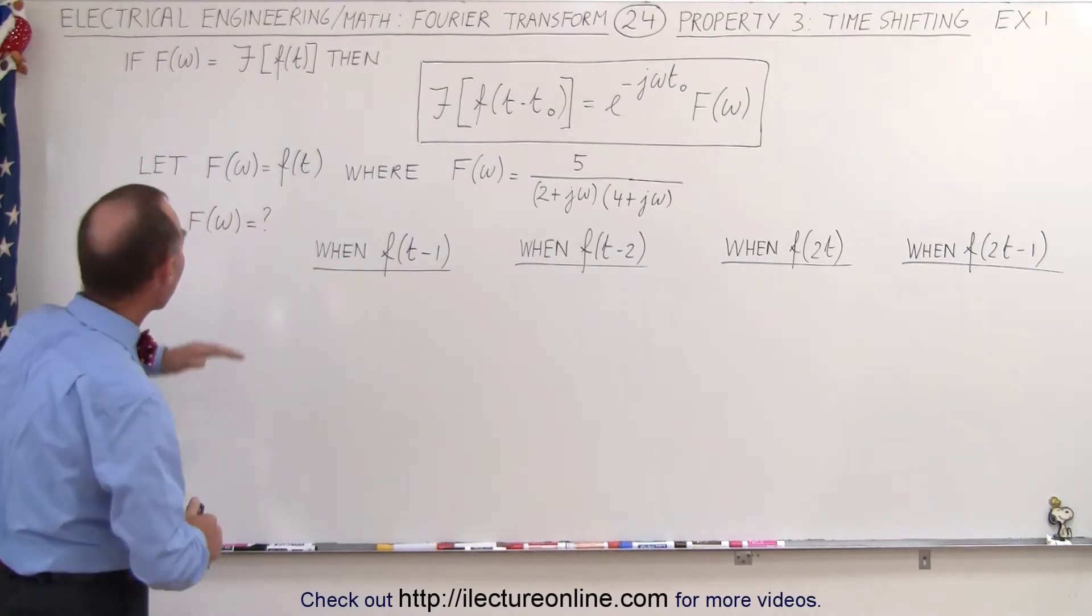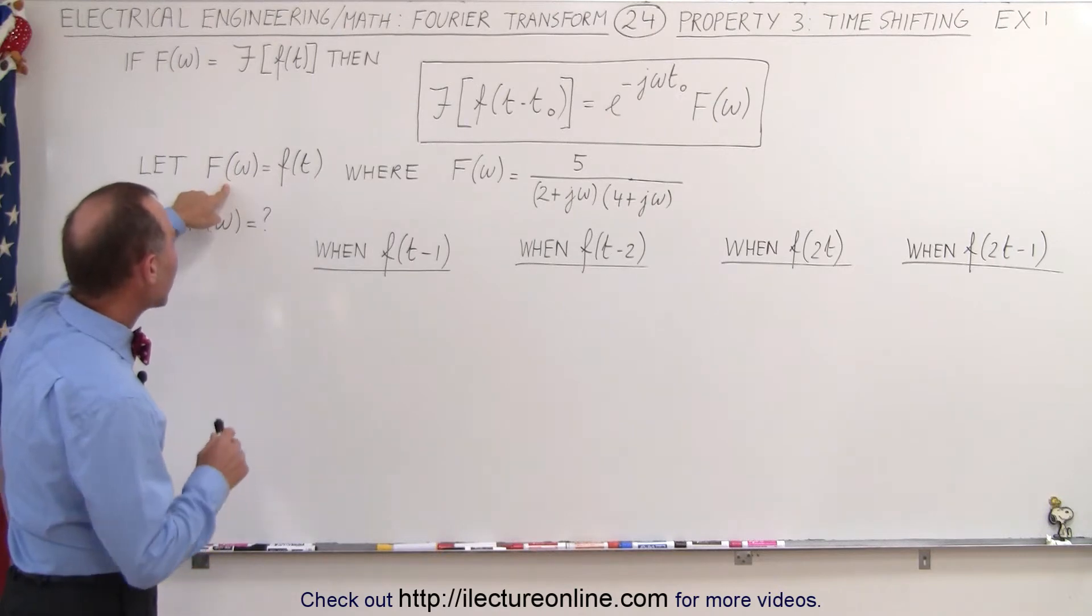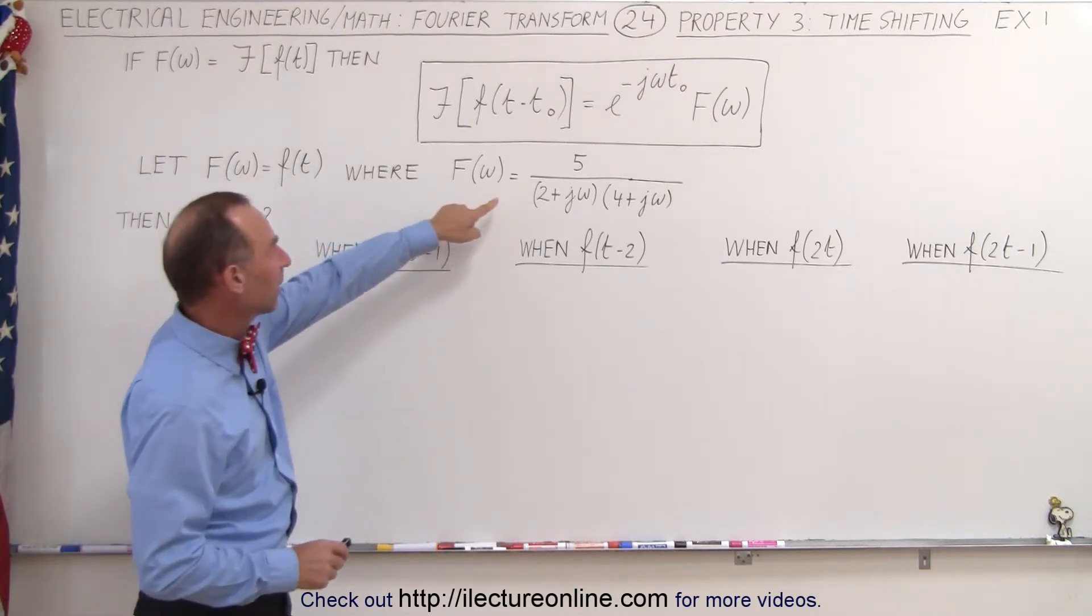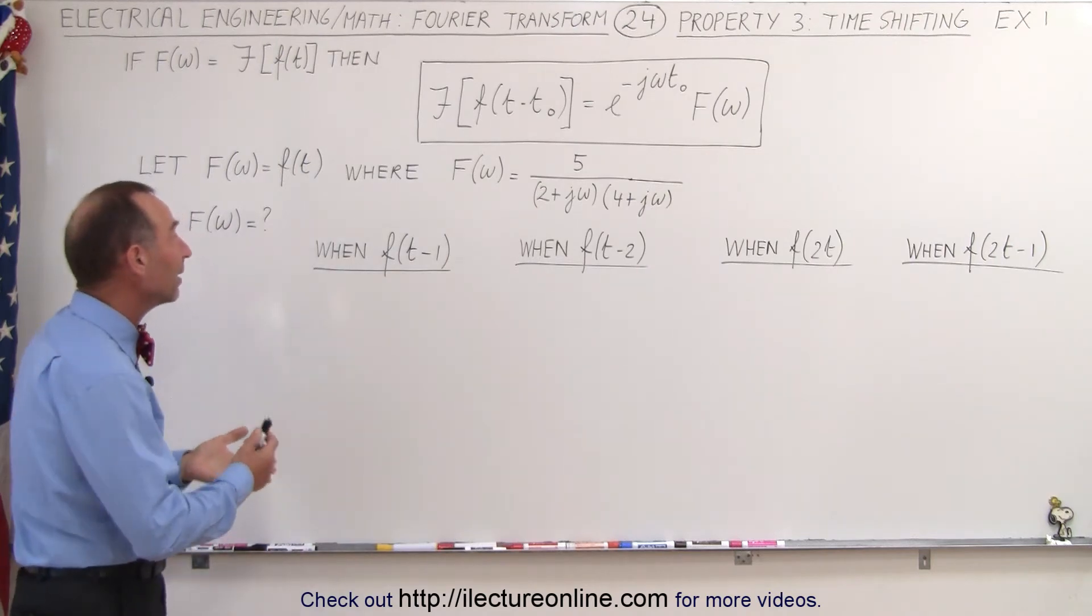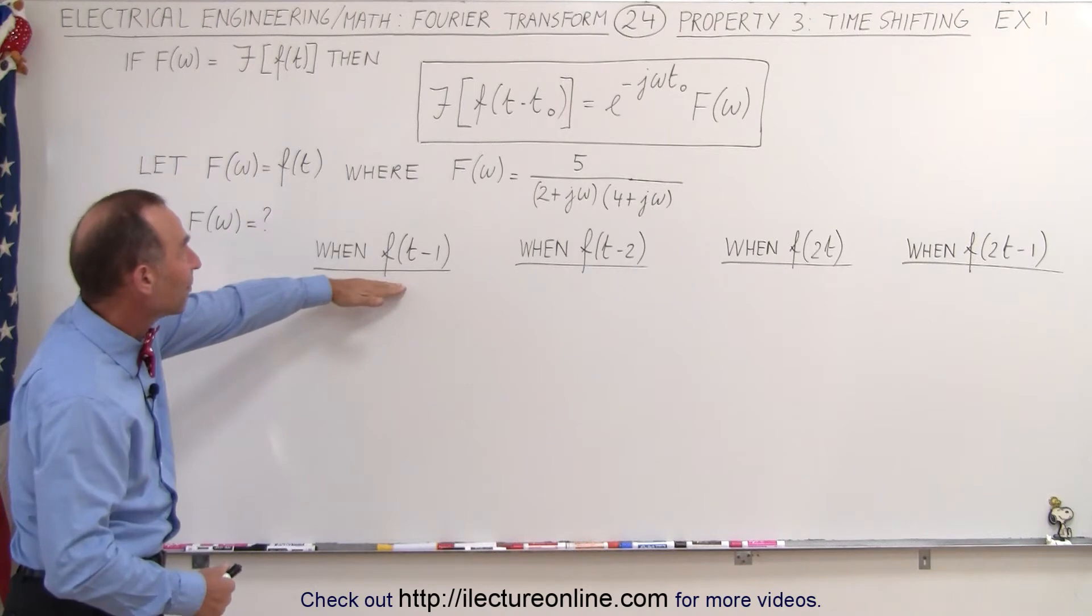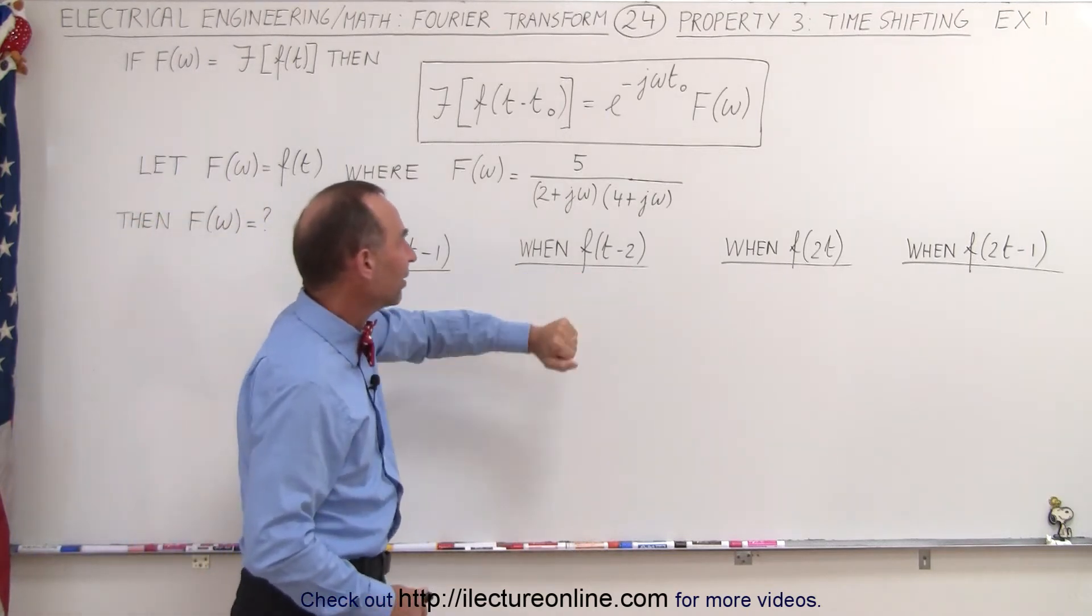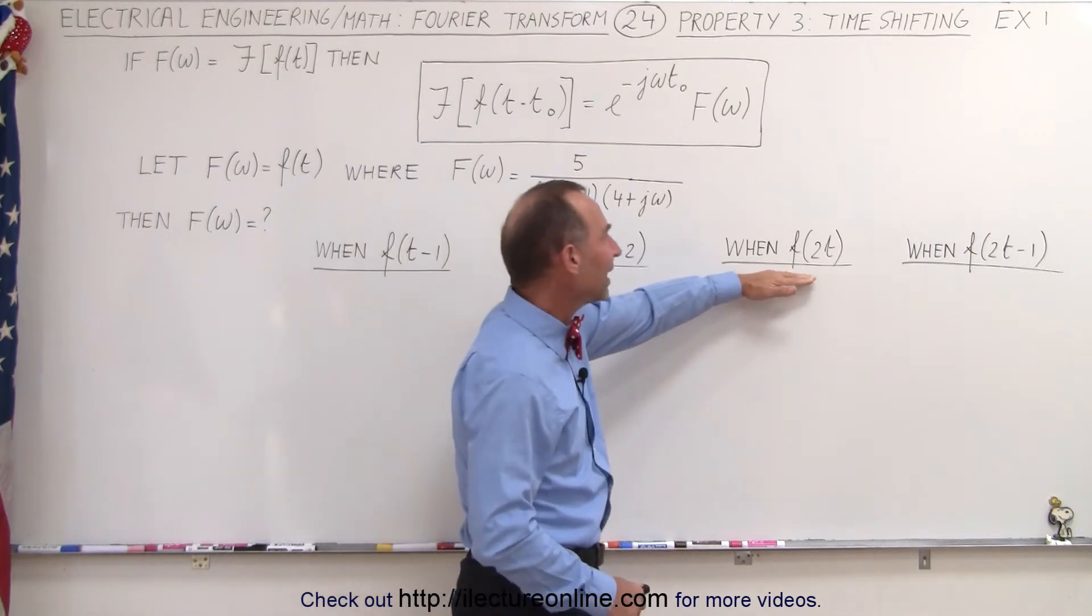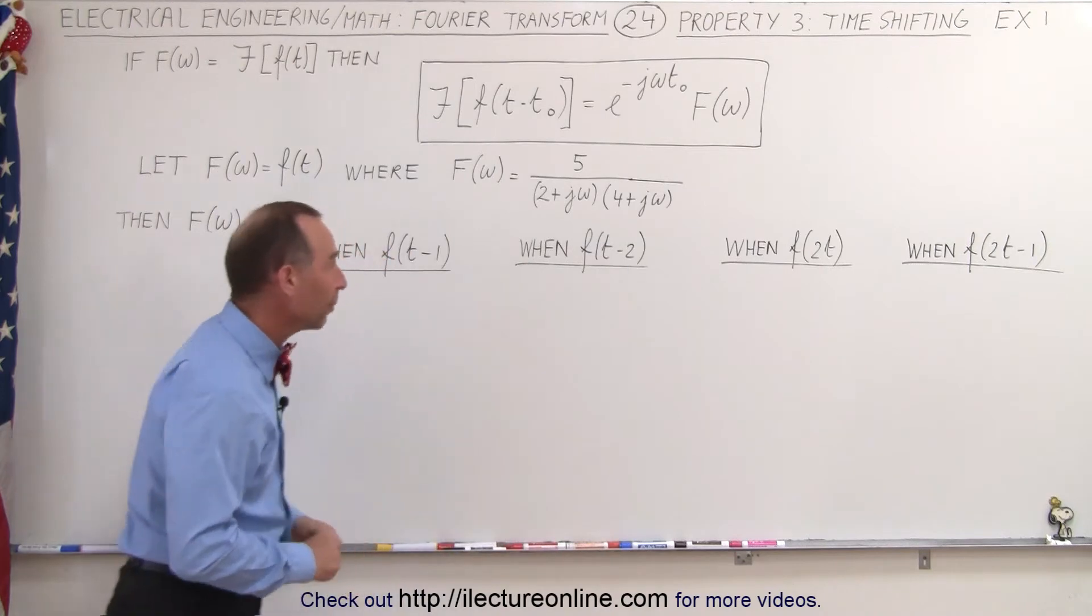So let's say we have a function f of t, so the Fourier transform of that function can be represented by this right here. If that's the case, then how do we find the Fourier transform? What will it look like when we have a time shift, when we have a time scaling, and then we'll combine both the time scaling and the time shifting to see what we end up with.